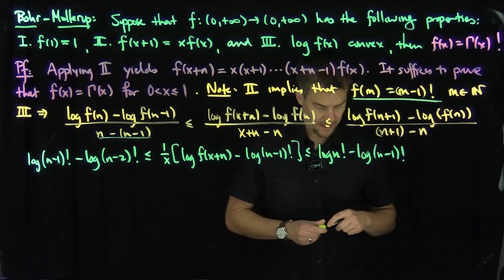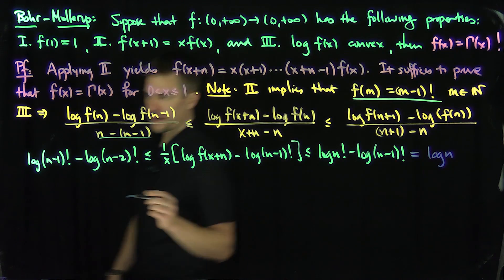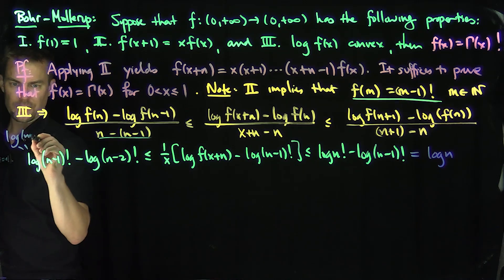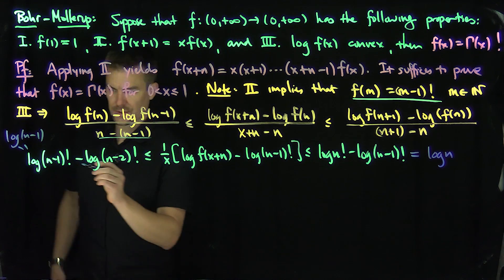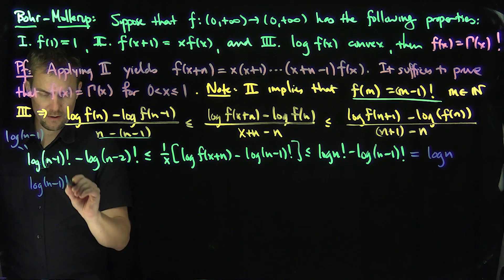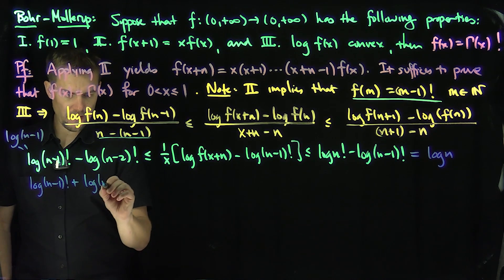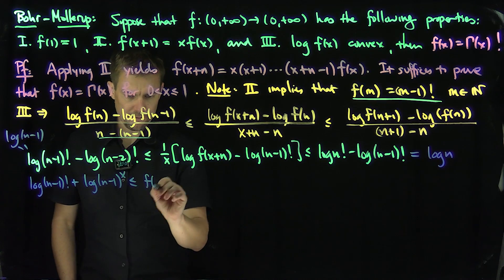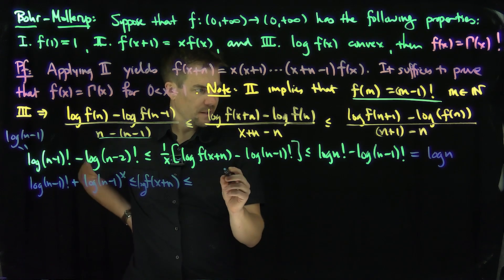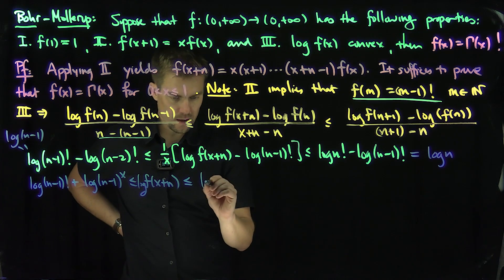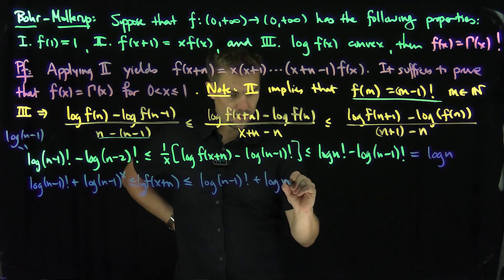We can simplify these terms: log n! − log(n−1)! = log n, and log(n−1)! − log(n−2)! = log(n−1). So we have log(n−1) ≤ (1/x)·[log f(x+n) − log(n−1)!] ≤ log n. Multiplying both sides by x and adding log(n−1)! gives us: log(n−1)! + x·log(n−1) ≤ log f(x+n) ≤ log(n−1)! + x·log n.